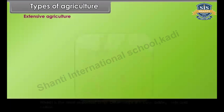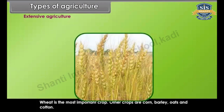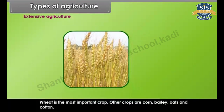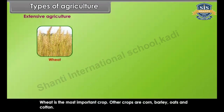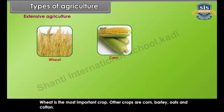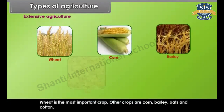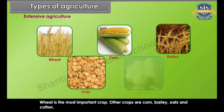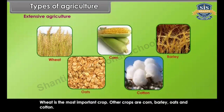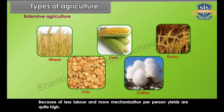Wheat is the most important crop in extensive agriculture. Other crops are corn, barley, oats and cotton. Because of less labor and more mechanization, per person yields are quite high.